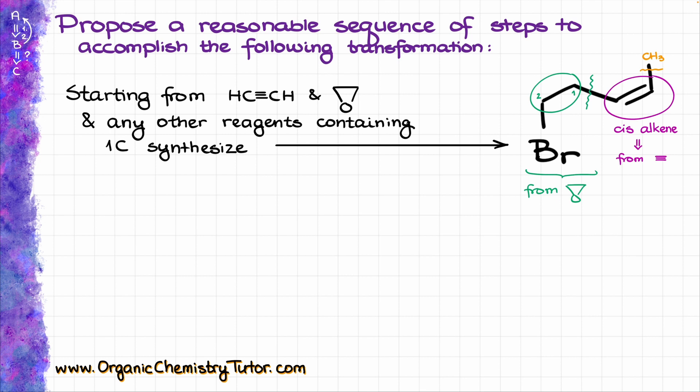So we know how we are going to be making our double bond, we know where the methyl group is going to be coming from, we know where the part with the bromine is going to be coming from, so now it's time to stitch it all together. I'm going to start with acetylene, and the first thing we are going to do is deprotonate it with a strong base, something like sodium amide, which is a common base of choice, giving us the acetylenide ion.